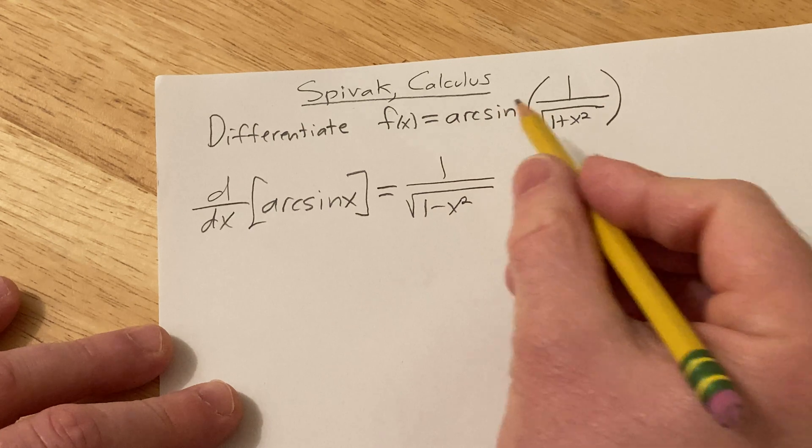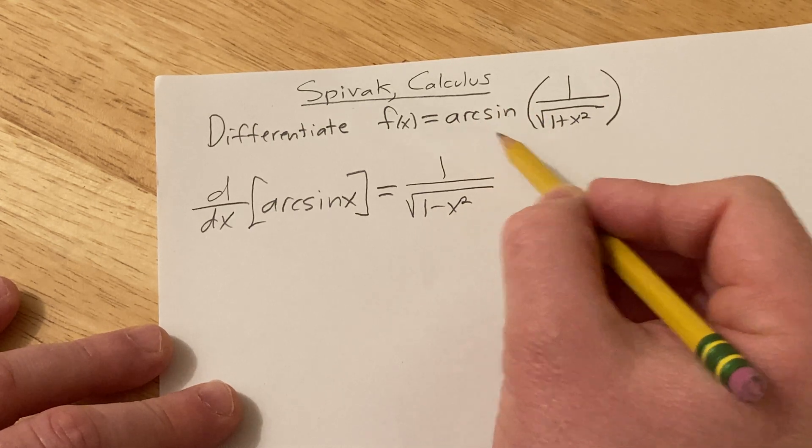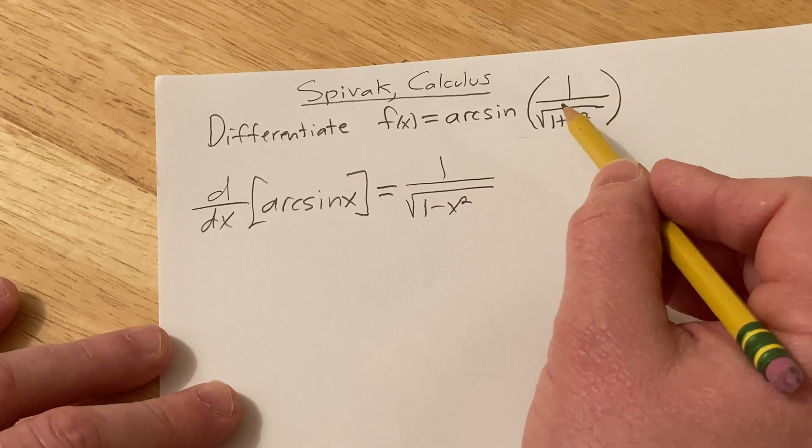Also we're gonna have to use the chain rule here. So basically that says that you take the derivative of the outside, evaluate it at the inside, and then you multiply by the derivative of the inside.